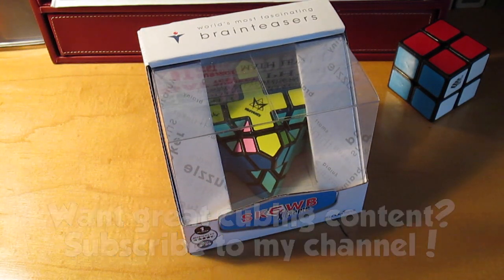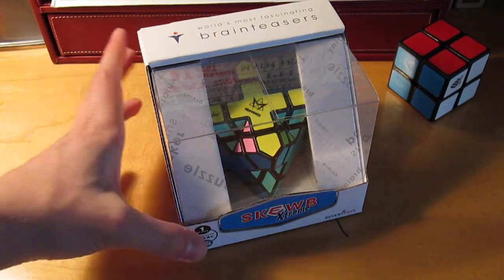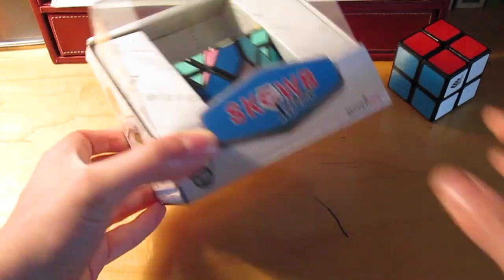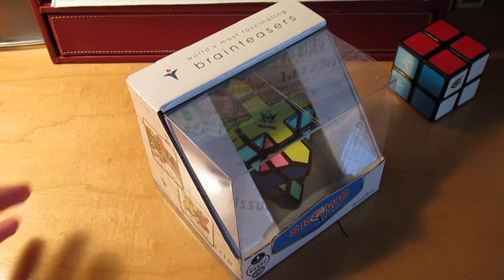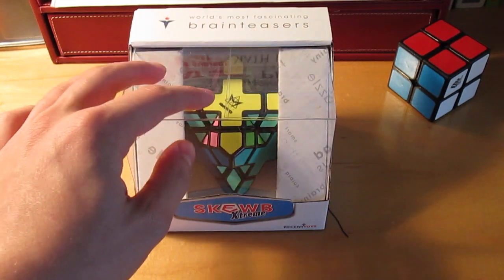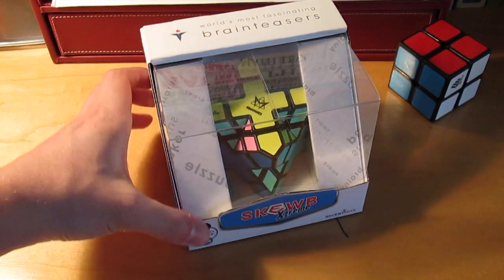So a few days ago I was at Barnes & Noble and as most people in the puzzling community already know, Barnes & Noble is known for selling various twisty puzzles, most of which are generally Rubik's brand cubes, but lately they've had a few Meffert's puzzles in stock including the Gearball and Pyraminx.